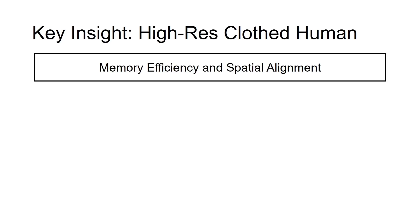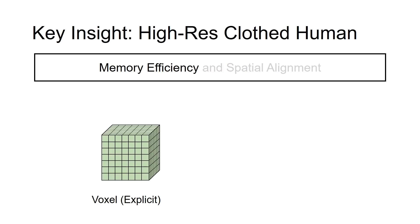Key insights for recovering a detailed human is twofold: memory efficiency and spatial alignment. Voxels are a common representation of 3D geometry. However, it requires a high-memory footprint, limiting its ability to scale to higher resolution.